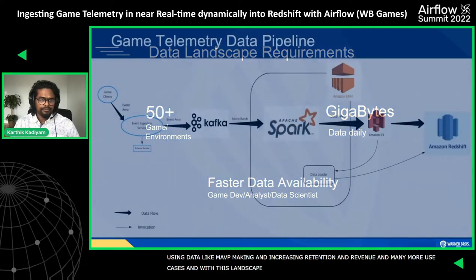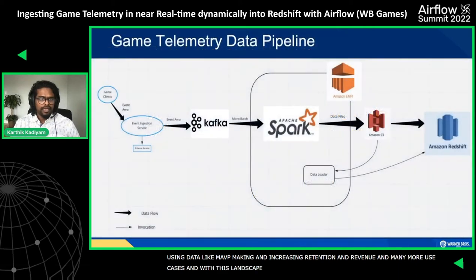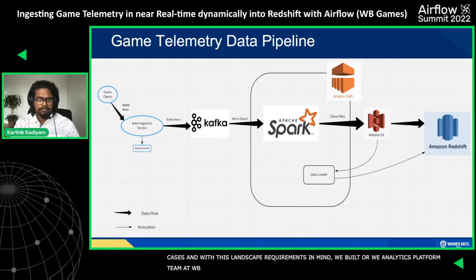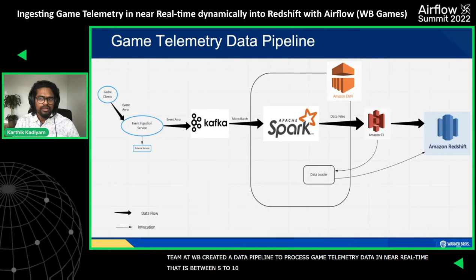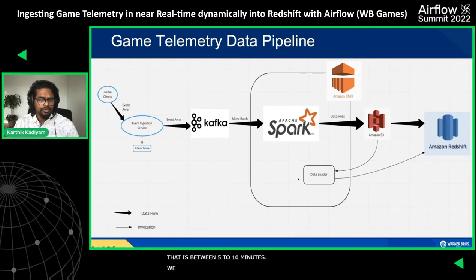These stakeholders need to make quick decisions on gameplay and monetization — use cases like matchmaking, increasing retention, revenue, and many more. With these landscape requirements in mind, the analytics platform team at WB created a data pipeline to process game telemetry data in near real time, between five to ten minutes.